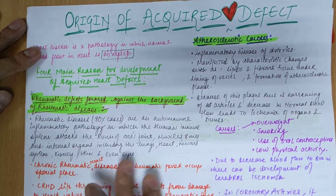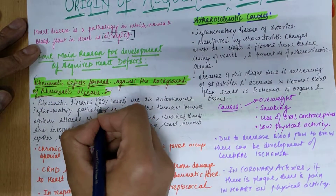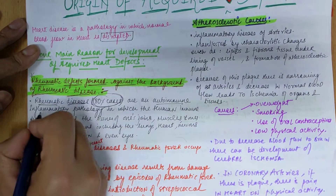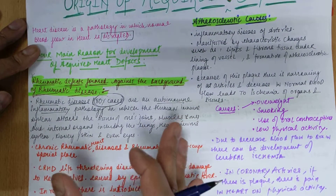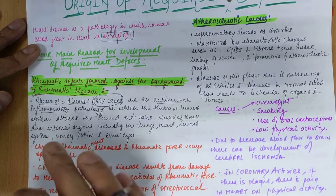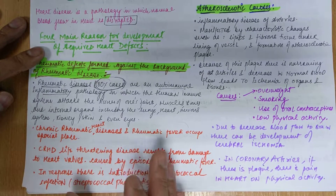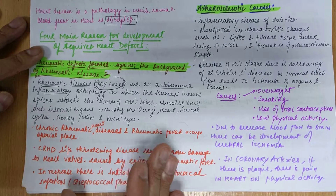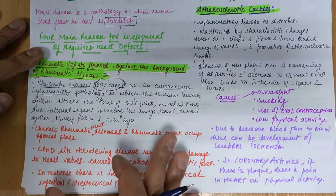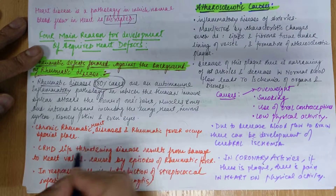The first cause is rheumatic heart disease, found against the background of rheumatic disease — accounting for about 80% of cases. It is an autoimmune inflammatory pathology in which the human immune system attacks the tissues of its own joints, muscles, and internal organs, including lungs, heart, nervous system, kidney, skin, and even eyes. This leads to chronic rheumatic heart disease and rheumatic fever.